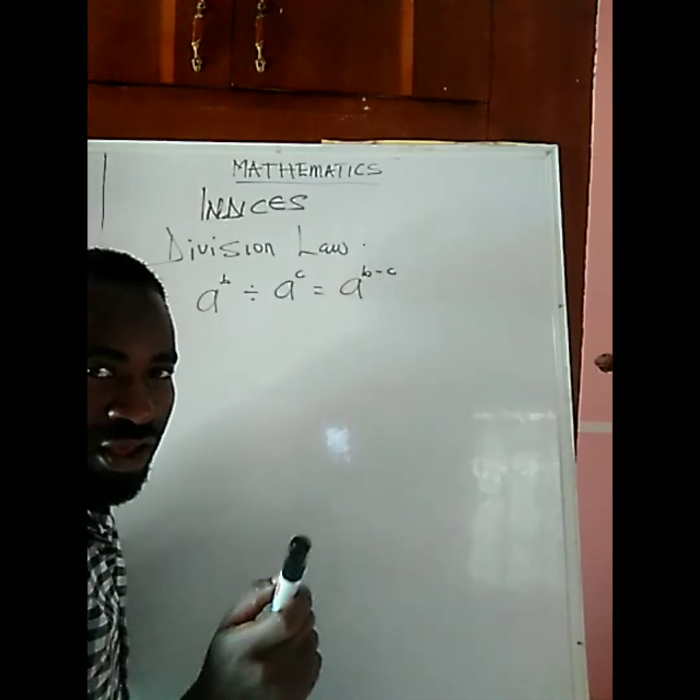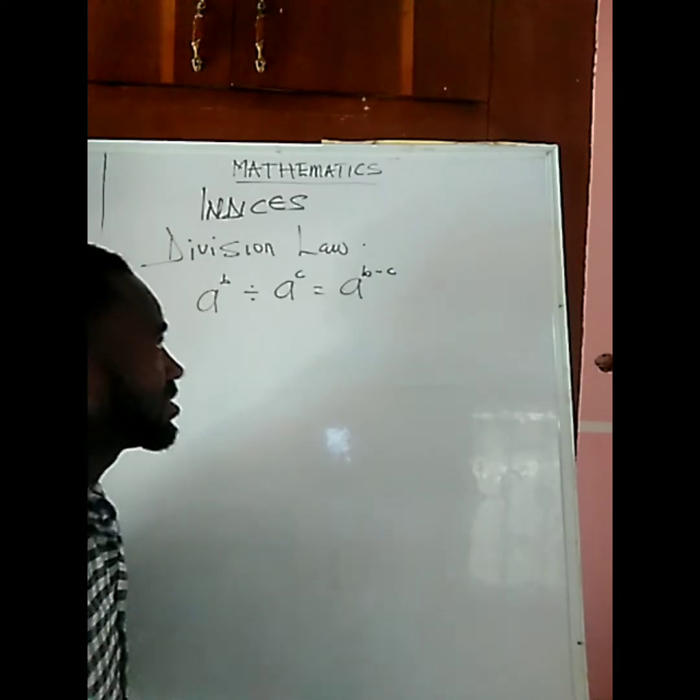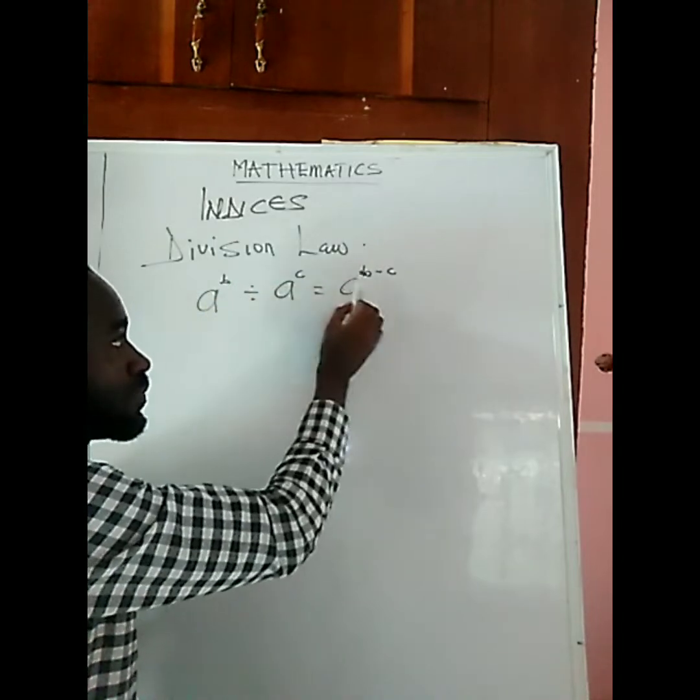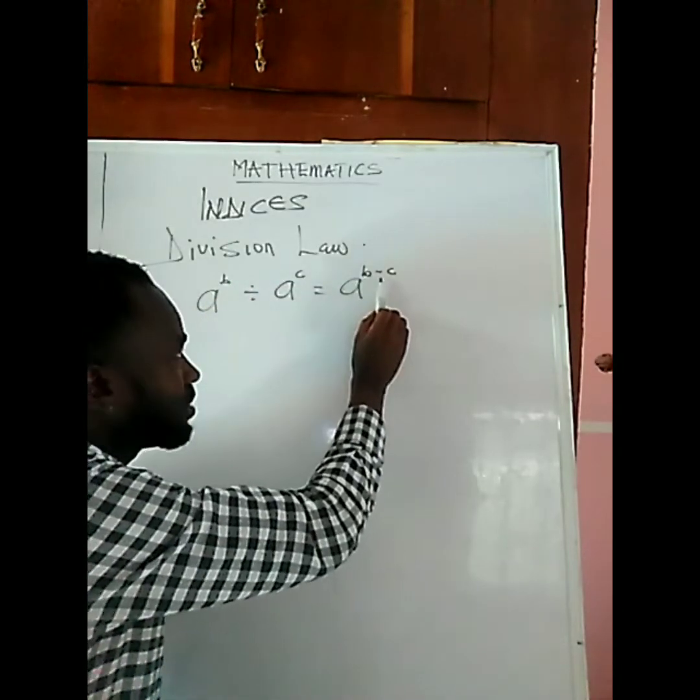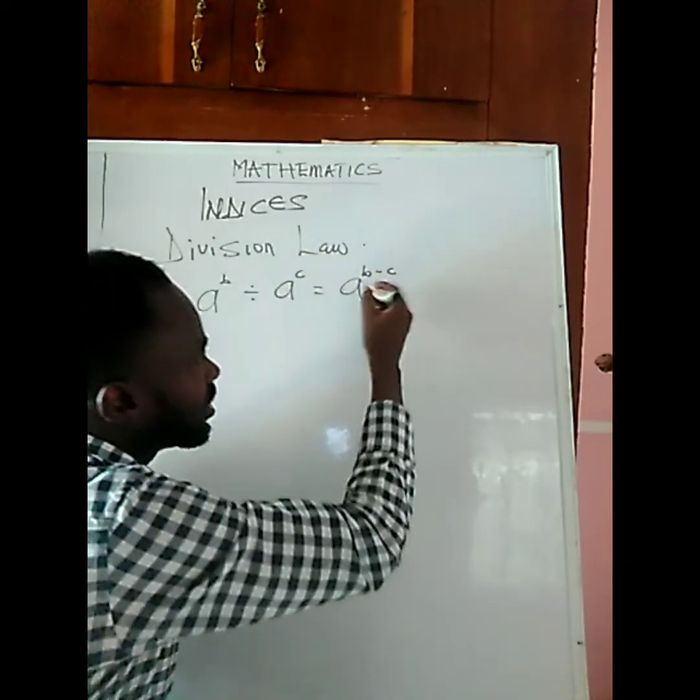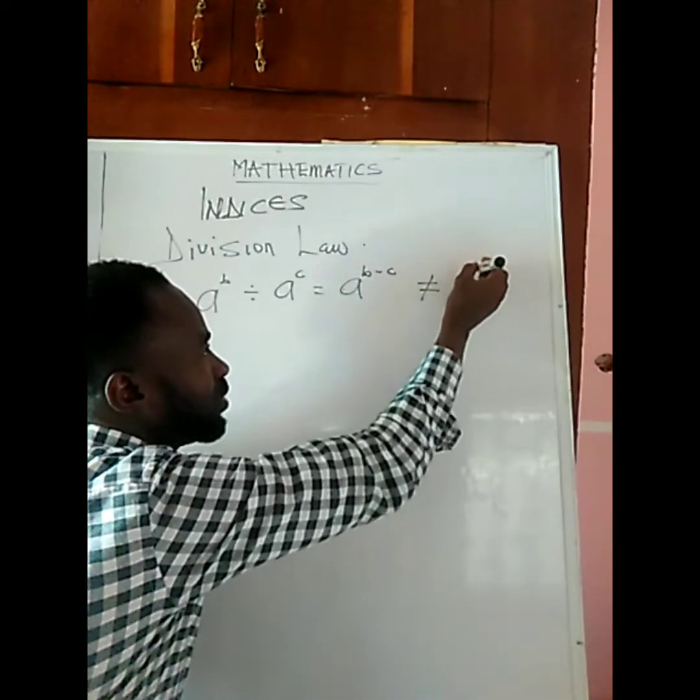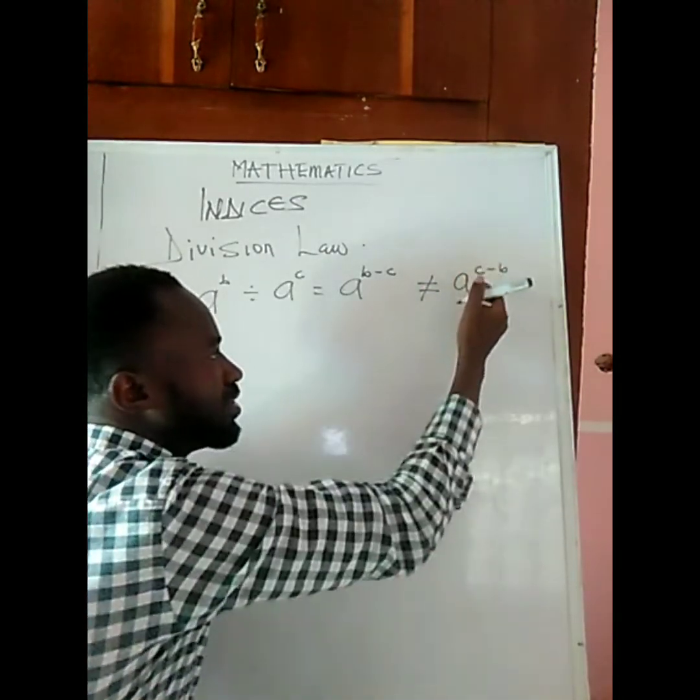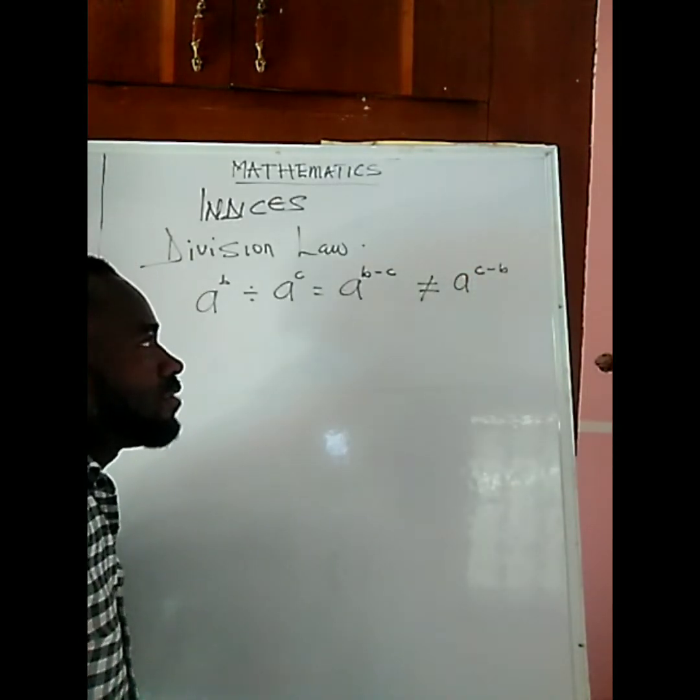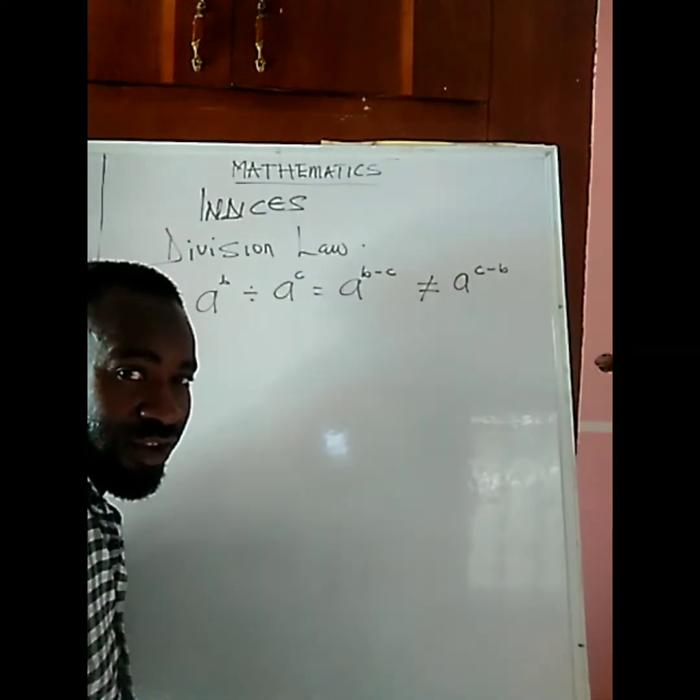The order is very important. What do I mean? The power of the first number will be the one that is subtracting the power of the second number. This law is not saying it's going to be a to the power of c minus b. This is wrong, it's not the same.